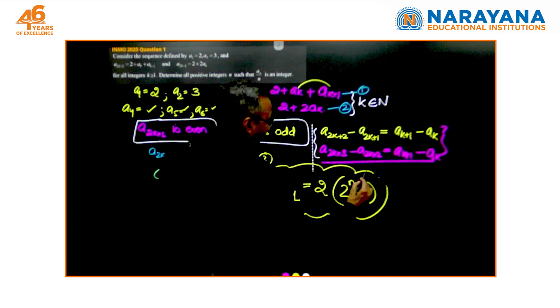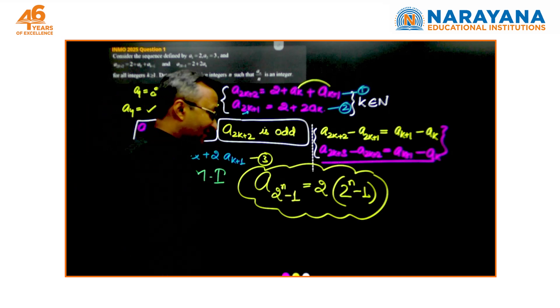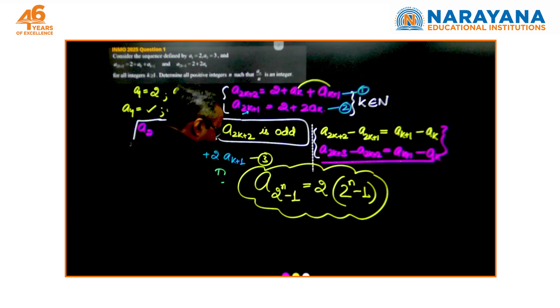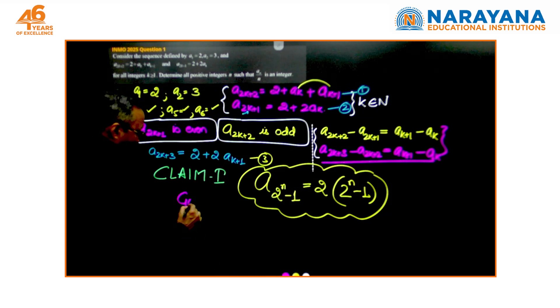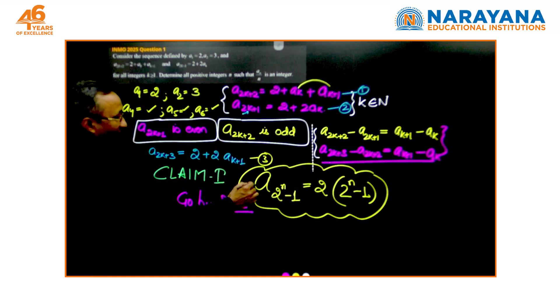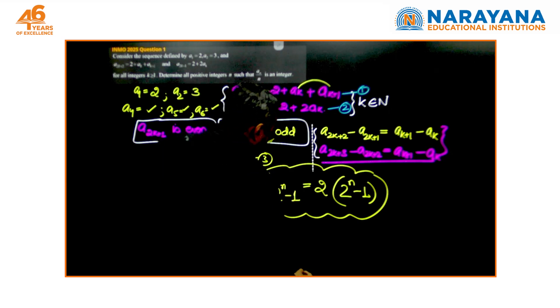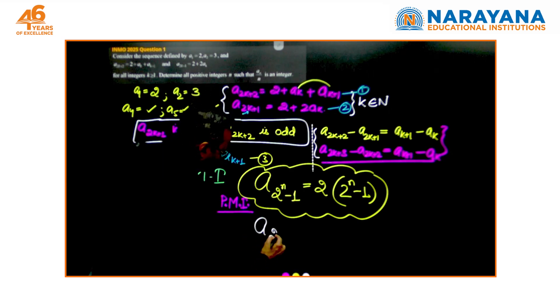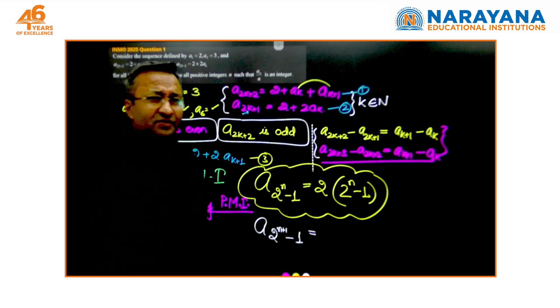I have no clue whether this holds true throughout, but for initial few values you find that this is true. And in order to establish those few values what we do is we go by principle of mathematical induction. From this point forward what we do is we assume this to be true and place n equals n+1.